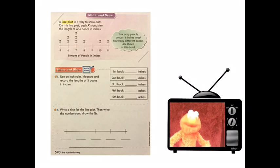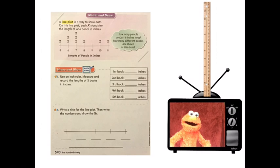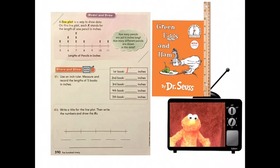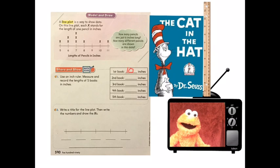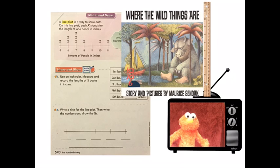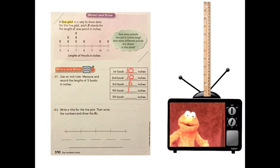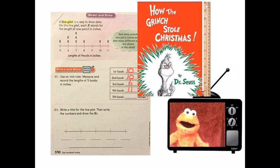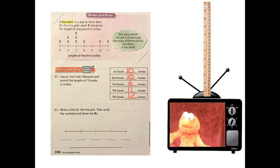Now let's take a look at number one. We have to use an inch ruler. Measure and record the length of five books in inches. Elmo is going to measure green eggs and ham. And now I write down the inches. And Elmo's going to measure cat in the hat. And now Elmo's going to write down the inches. And Elmo's going to measure Harry Potter. And write down the inches. And now Elmo's going to measure where the wild things are. Elmo likes that book. It's about monsters. And now I write down the inches. And finally, Elmo's going to measure the Grinch that stole Christmas. And now I write down the inches.